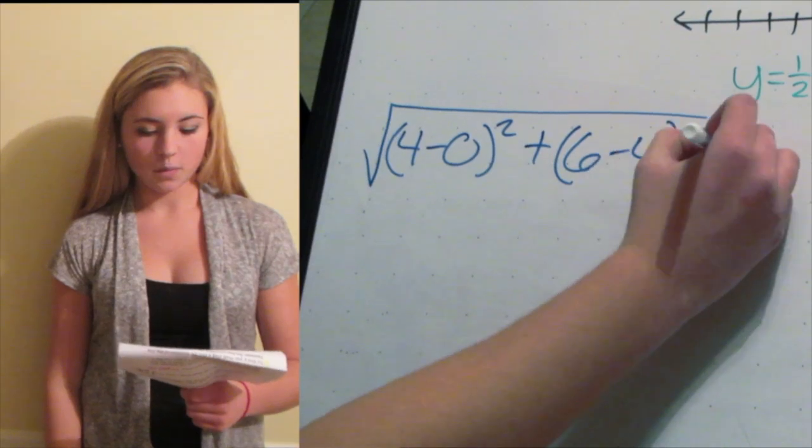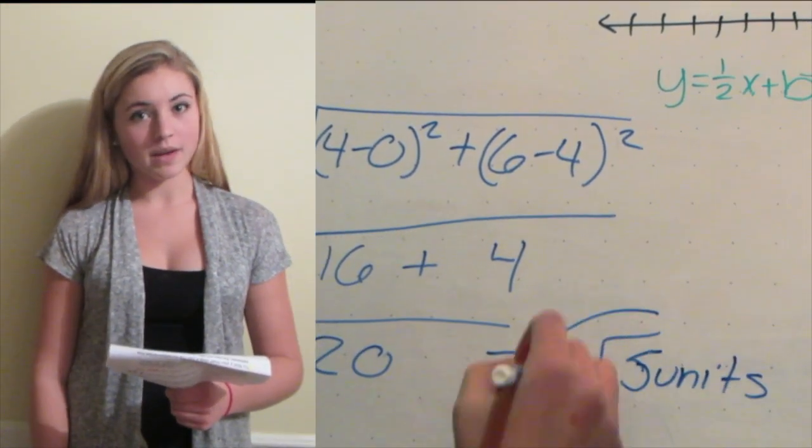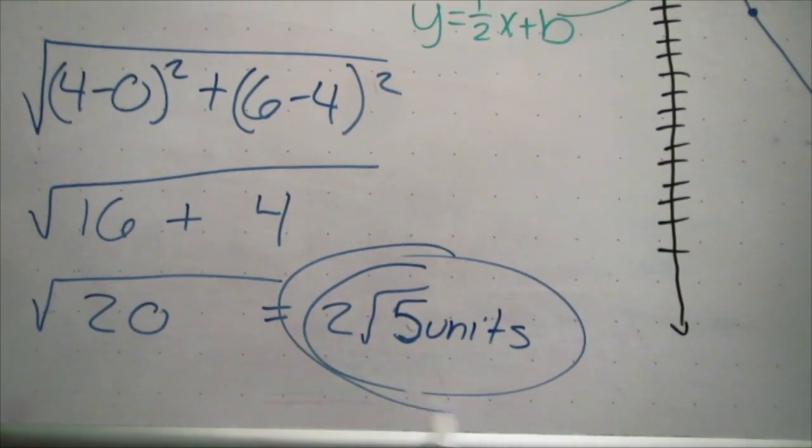The distance formula is the square root of (x2 minus x1) squared plus (y2 minus y1) squared. Once you plug in the coordinates and simplify, you have your answer. In this case, the answer is 2 root 5 units.